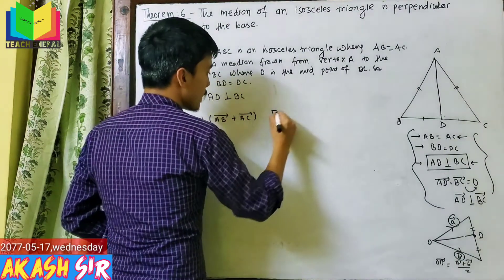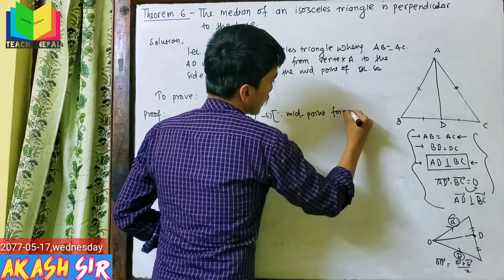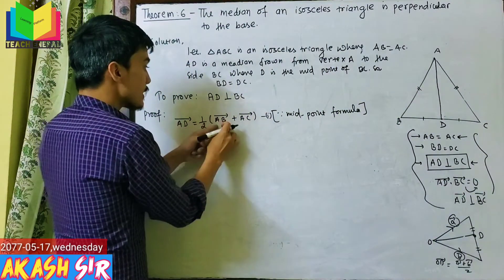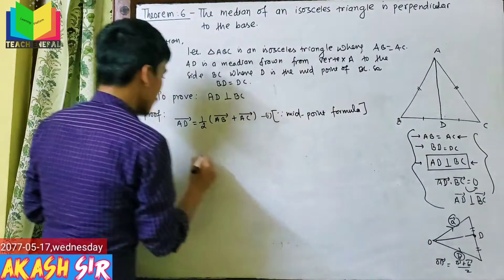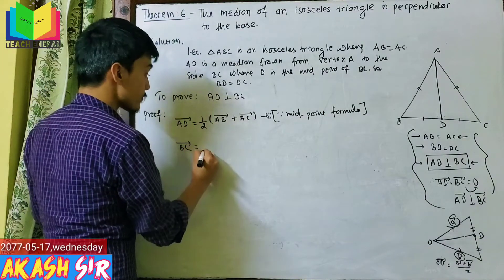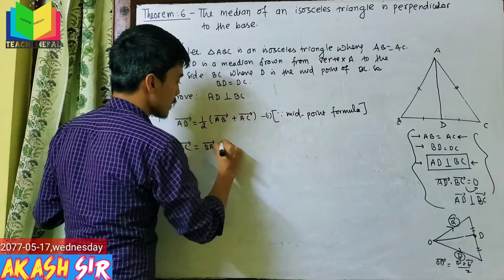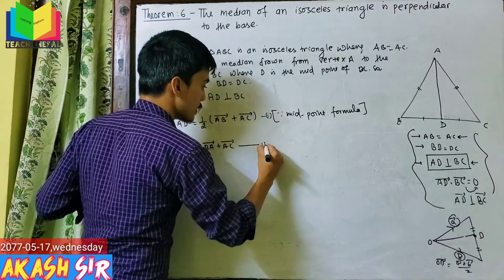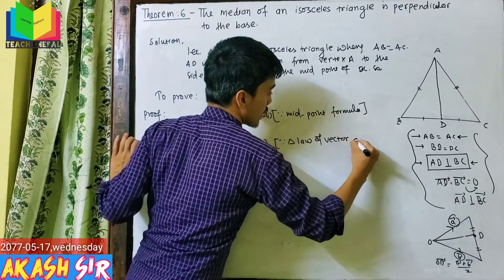Now for the BC vector. The BC vector equals BA vector plus AC vector, by the triangle law of vector addition. This is Equation 2.